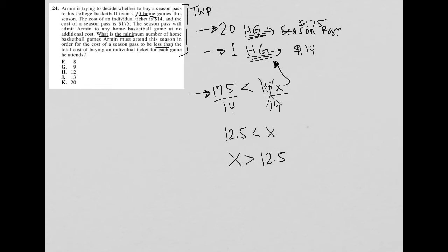So the minimum number would be 13. Here's how I think about it: if X is greater than 12.5, that means it cannot be 8, it cannot be 9, it cannot be 12. Both 13 and 20 are greater than 12.5, but 13 is the minimum. What is the minimum number of home games? That's the minimum number that's greater than 12.5.